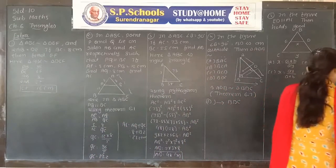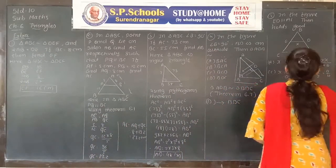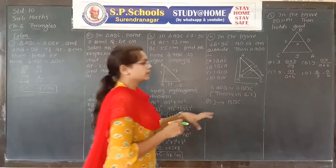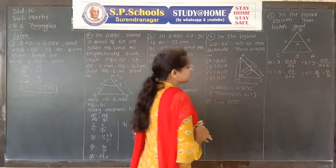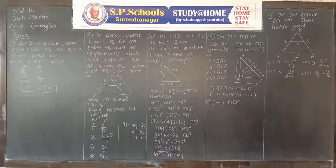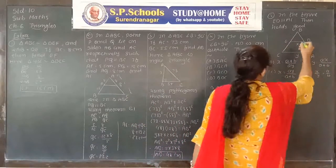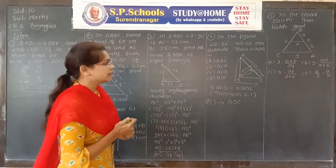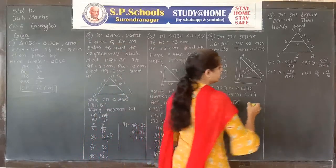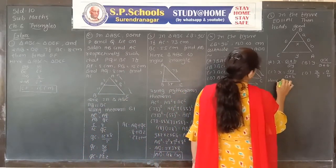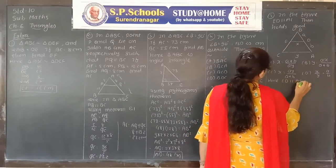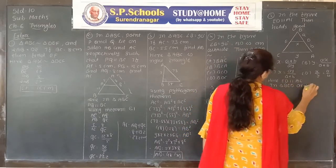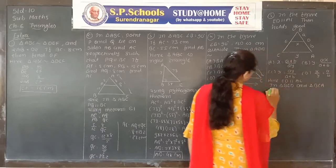Fifth problem: in the figure, ED is parallel to AC. We need to find which relation holds. ED = x, CA = y, BD = a, DA = b. We first prove that triangles BED and BCA are similar. Since ED is parallel to AC, in triangles BED and BCA: angle EBD equals angle CBA because they are common angles between the two triangles.